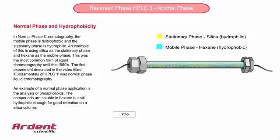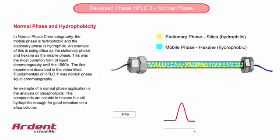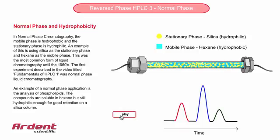If we use a stationary phase such as silica, which is hydrophilic, and a hydrophobic mobile phase such as hexane, then this type of HBLC is considered normal phase HBLC. In fact, it was the most common type of HBLC until about the 1960s, and this might help to explain its name.